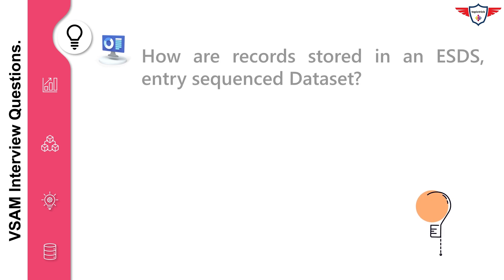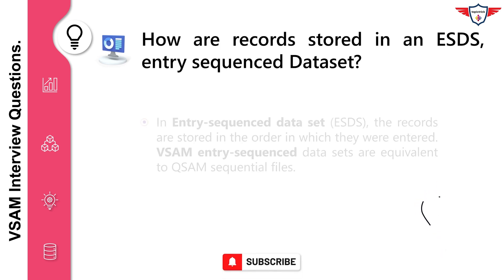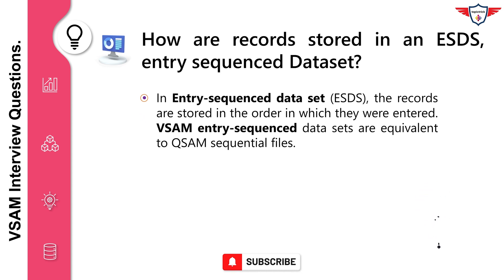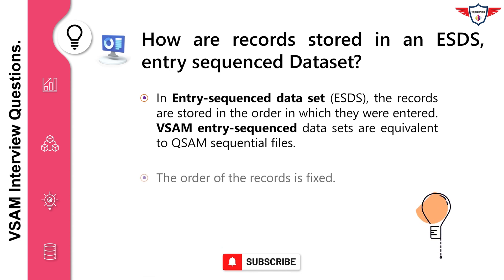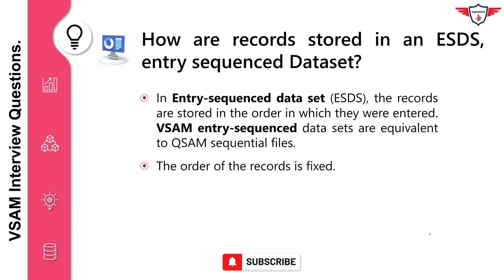How are records stored in an Entry Sequence Dataset (ESDS)? In an Entry Sequence Dataset (ESDS), the records are stored in the order in which they were entered. VSAM Entry Sequence Datasets are equivalent to QSAM sequential files. The order of the records is fixed.